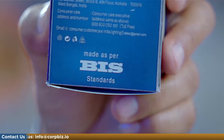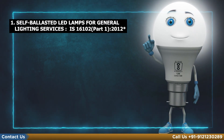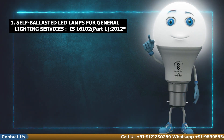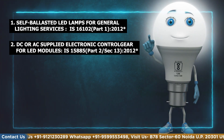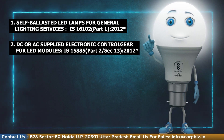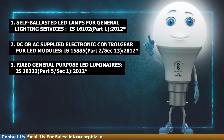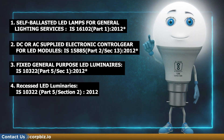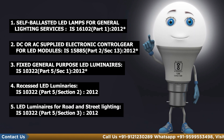There are 11 types of LED products covered under the BIS CRS scheme. These include: Self-Ballasted LED Lamps for General Lighting Services under IS 16102 Part 1 2012; DC or AC Supplied Electronic Control Gear for LED Modules under IS 15885 Part 2 Section 13 2012; Fixed General Purpose LED Luminaires under IS 10322 Part 5 Section 1 2012; and Retrofit LED Luminaires under IS 10322 Part 5 Section 2 2012.